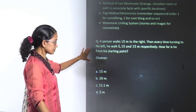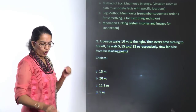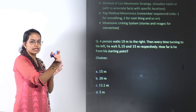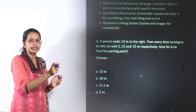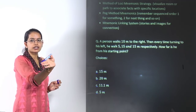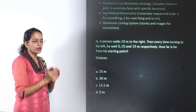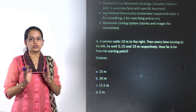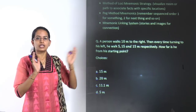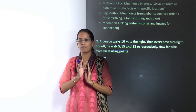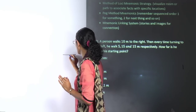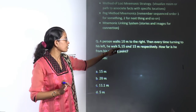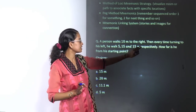The next question is a direction problem. A person walks 10 meters to the right. In direction problems, try to move your pen with the direction — if you are right-handed, visualize turning right with your pen. So the person walks 10 kilometers to the right, then from that point walks 5, 15, and 15 kilometers respectively to the left.